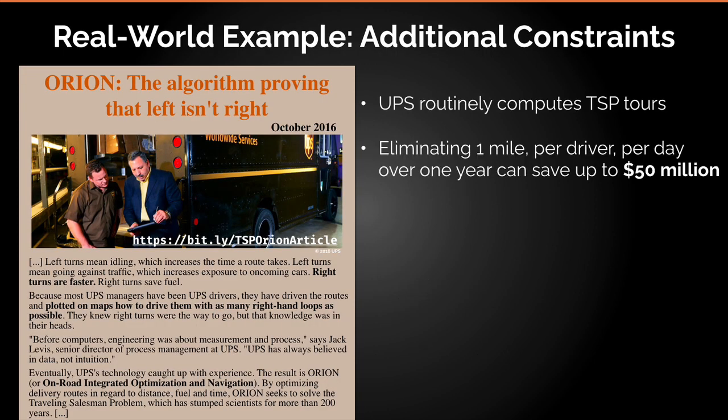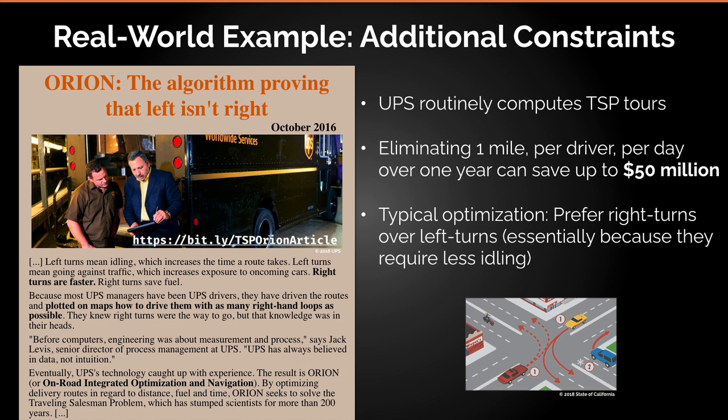Here's a cool real-world application. UPS has found an optimization of TSP that avoids making right turns. When making a right turn at an intersection, you have to wait for traffic to clear, whereas often a left turn can be made without waiting for a light. By creating TSPs that optimize for more left turns than right turns, UPS has been able to save a considerable amount on gas and delivery time.